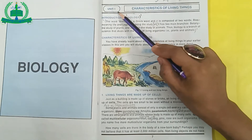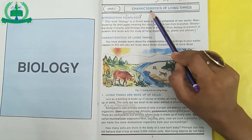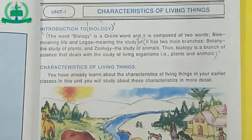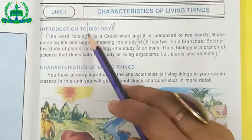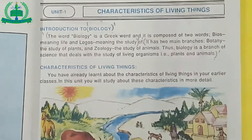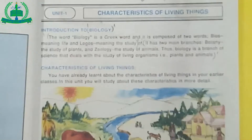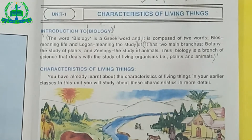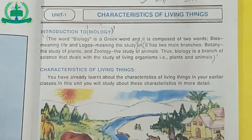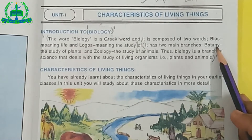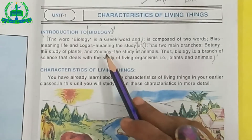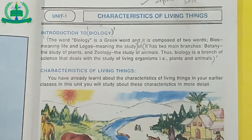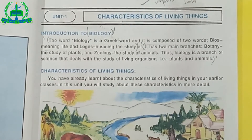This is Unit number 1: Characteristics of Living Things. Introduction to Biology. The study of all living things is called biology. There are two main branches of biology: Botany and Zoology. In botany we study plants, and in zoology we study animals.